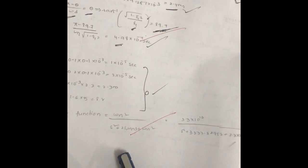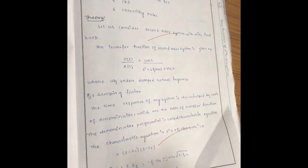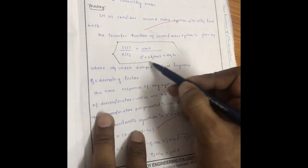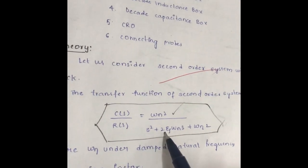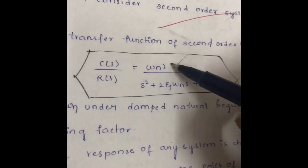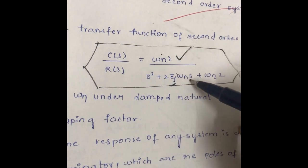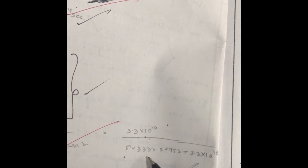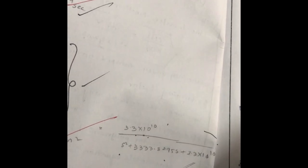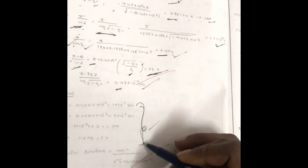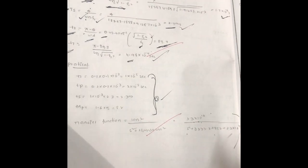After finding all these values, we substitute them in the transfer function formula: C(s)/R(s) = ωn² / (s² + 2ζωns + ωn²). We already have the ωn and ζ values. Substituting gives the practical transfer function: 3.33 × 10¹⁰ / (s² + 3333.3s + 3.33 × 10¹⁰). This is the required transfer function and these are the required time domain specifications for the experiment on the time response of a second order system.